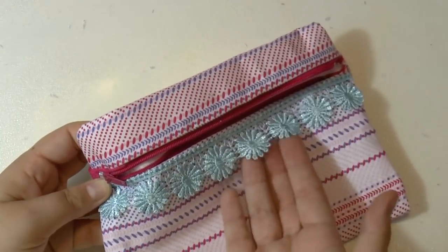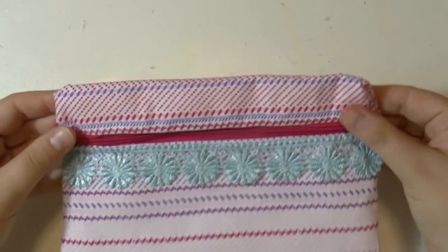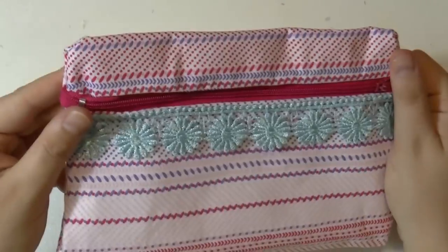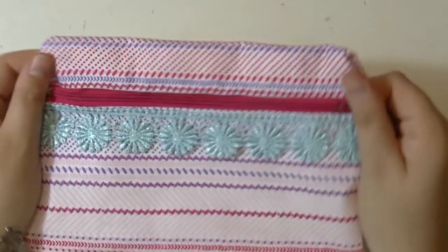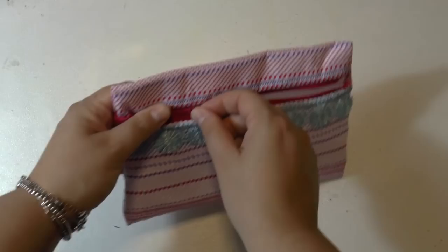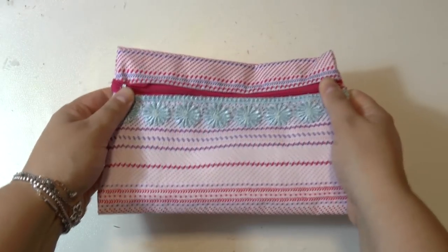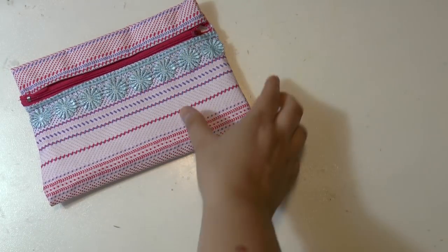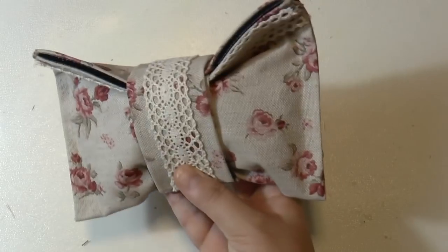And that's it. The second pencil case is done. What do you think? I think it's adorable and I really like it. So let's see how to make the third design, the bow pencil case.